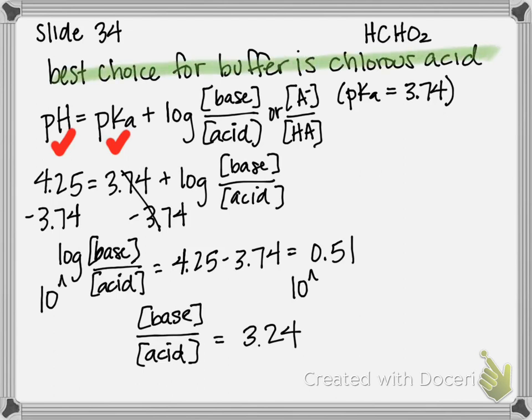So first part of the answer is best choice for buffer is going to be chlorous acid. The second part is that the base to acid concentration ratio should be 3.24.